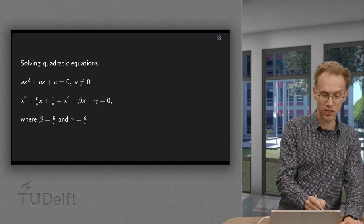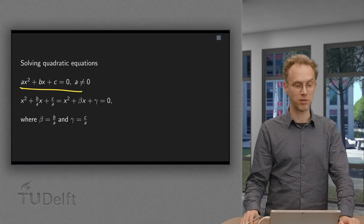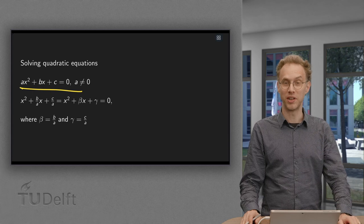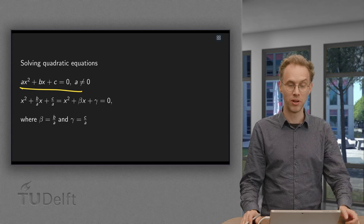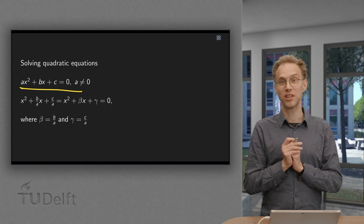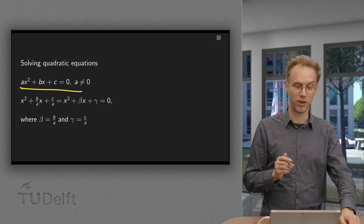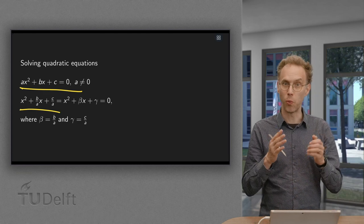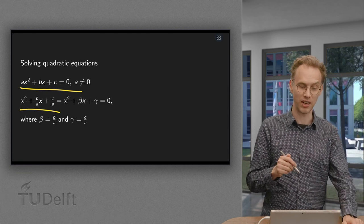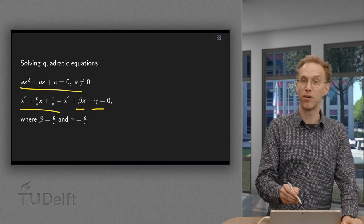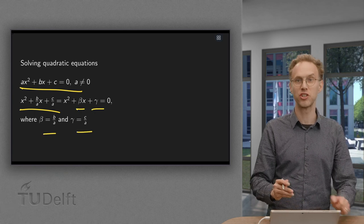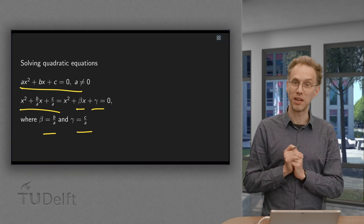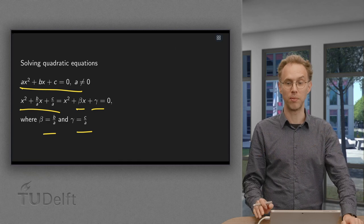We look at quadratic equations: a times x squared plus b times x plus c equals zero. We want them really quadratic, so a is not zero, otherwise we lose our quadratic term. If a is not zero we can divide by it, which means we get a 1 in front of the x squared, giving us x squared plus beta times x plus gamma, where beta equals b over a and gamma equals c over a.